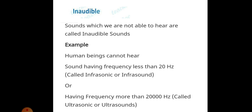The frequency range of less than 20 hertz — that sound is called infrasonic sound. And sounds with frequency more than 20,000 hertz are called ultrasonic sound, or ultrasound. The sound of frequency more than 20,000 hertz is called ultrasonic.